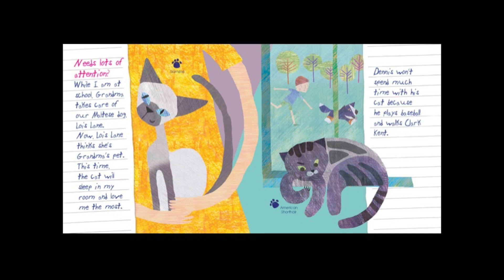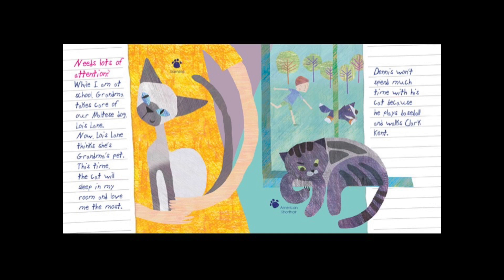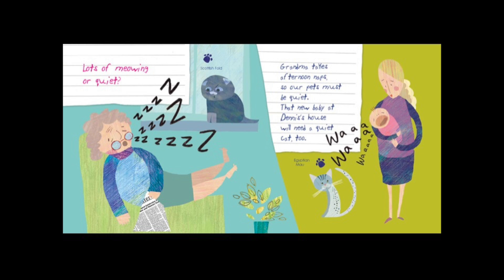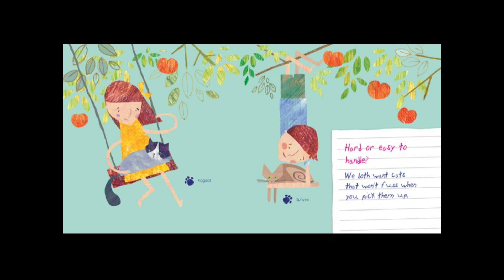Needs lots of attention: while I am at school, Grandma takes care of our Maltese dog Lois Lane — now Lois Lane thinks she's Grandma's pet. This time the cat will sleep in my room and love me the most. Dennis won't spend much time with his cat because he plays baseball and walks Clark Kent. Needs for affection: I want a cat that sits in my lap; Dennis wants a warm body sitting beside him, not in his lap. Lots of meowing or quiet: Grandma takes afternoon naps so our pets must be quiet, and that new baby at Dennis' house will need a quiet cat too. Hard or easy to handle: we both want cats that won't fuss when you pick them up.